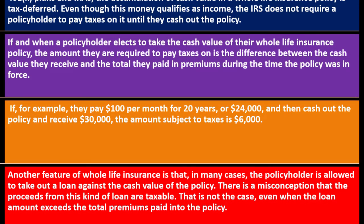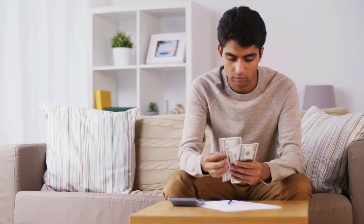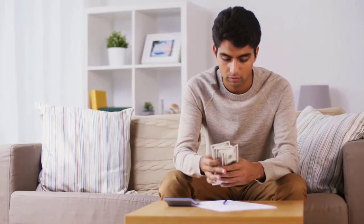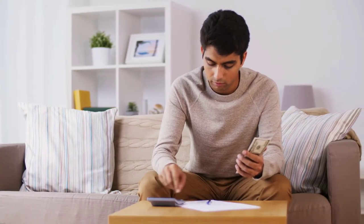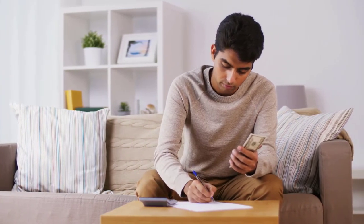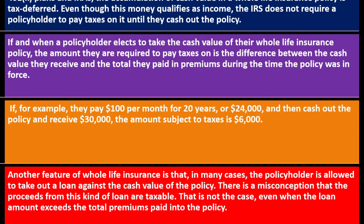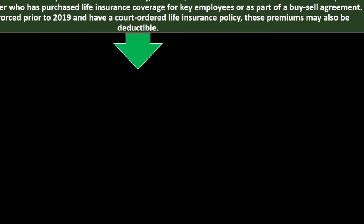Another feature of whole life insurance is that in many cases, the policyholder is allowed to take out a loan against the cash value of the policy. You might wonder whether you can access the money without paying taxes — for example, by taking a loan using the cash value as collateral, though you would pay interest on it. There is a misconception that the proceeds from this kind of loan are taxable. That is not the case, even when the loan amount exceeds the total premiums paid into the policy.